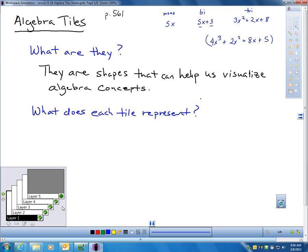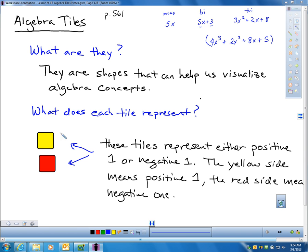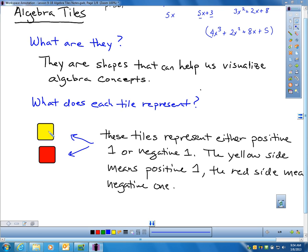First of all, we have to learn what all the tiles are. I gave you a sheet that you can cut out, and if you want, you can even color it. When you look at your little sheet, the first thing you're going to see is little square tiles. One side of the tile you can color yellow, and on the opposite side, you color them red. The yellow side represents positive 1, and the red side represents negative 1.